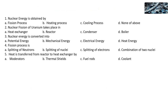Nuclear energy is first converted into: potential energy, mechanical energy, electrical energy, or heat energy — the answer is heat energy. The fission process is: splitting of neutrons, splitting of nucleus, splitting of electrons, or splitting of two nuclei — the answer is splitting of nucleus. Heat is transferred from the reactor to the heat exchanger by: moderators, thermal shields, fuel rods, or coolant — the answer is coolant.